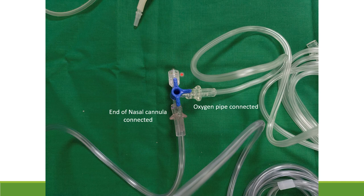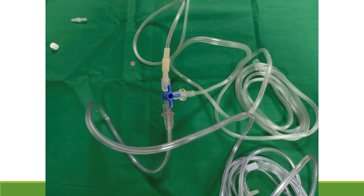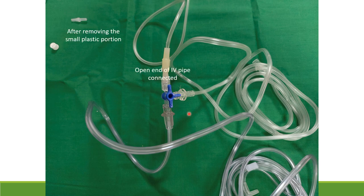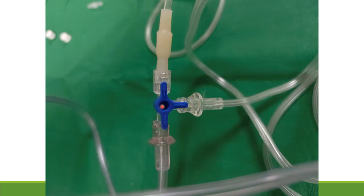Before attaching the IV pipe, you'll notice there's a small plastic piece on the end — you can't attach it as-is. Remove the plastic piece, and then the rubber end will easily attach to the open end of the three-way stopcock. Once attached, the three-way stopcock will have one end connected to the open end of the IV pipe.